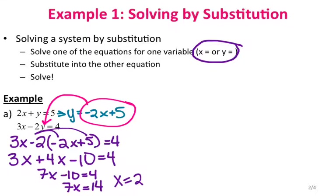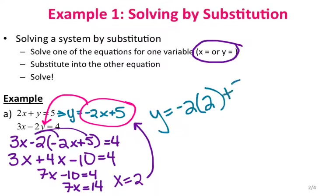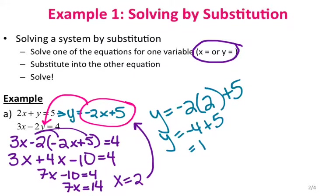Now that I know x is 2, I can use that to solve for y. The equation circled in pink already has y by itself, so I'll plug 2 in there: y equals negative 2 times 2 plus 5. So y equals negative 4 plus 5, which is 1. The final answer is the ordered pair — x is 2, y is 1.